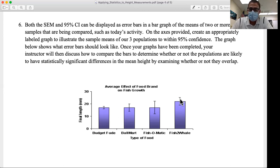I'm 95% confident the actual mean of Fish-to-Whale fed fish falls in this range. These two ranges do not overlap, so the actual population mean is probably not the same for these two different fish foods.